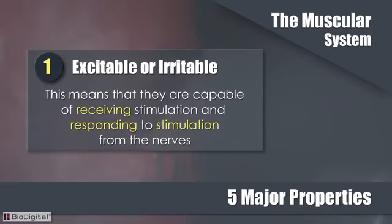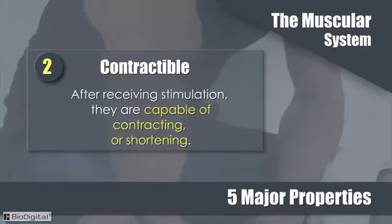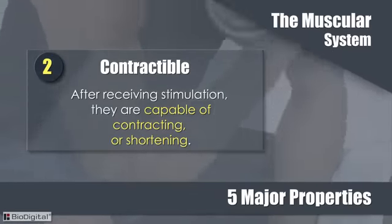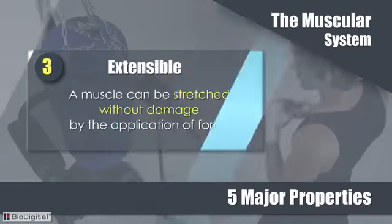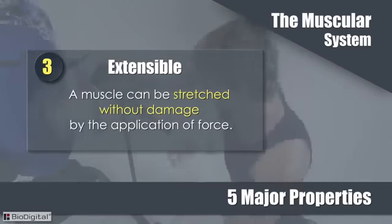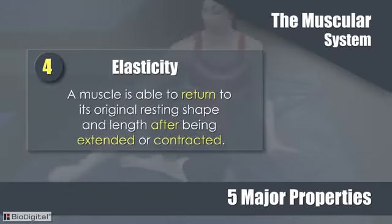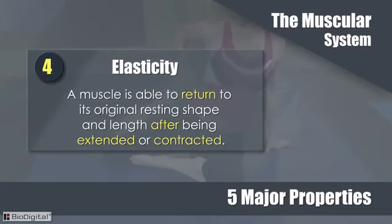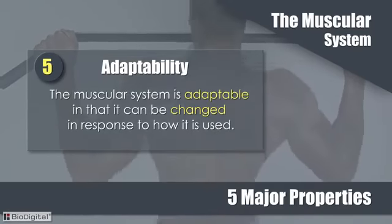Muscles are excitable or irritable — they are capable of receiving stimulation and responding to stimulation from the nerves. Two, they are contractible: after receiving stimulation they are capable of contracting or shortening. Being extensible means a muscle can be stretched without damage by the application of force. With elasticity, a muscle is able to return to its original resting shape and length after being extended or contracted.